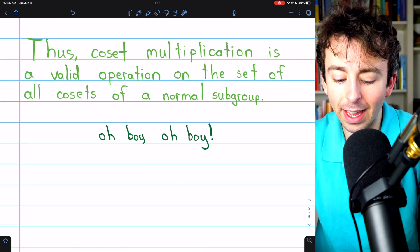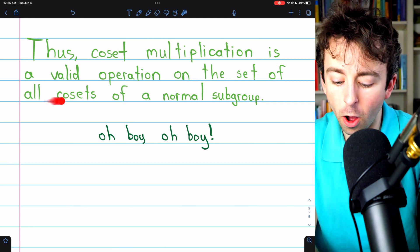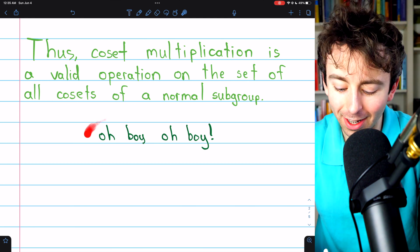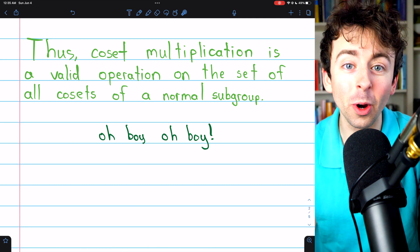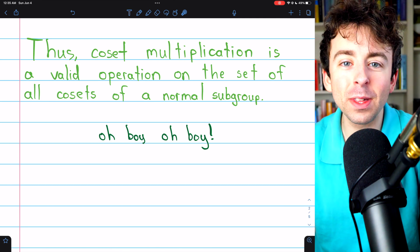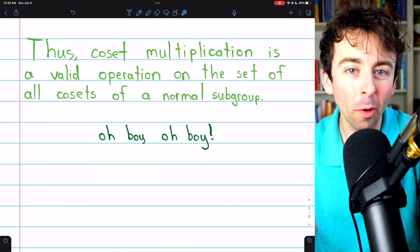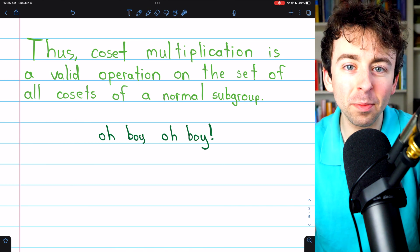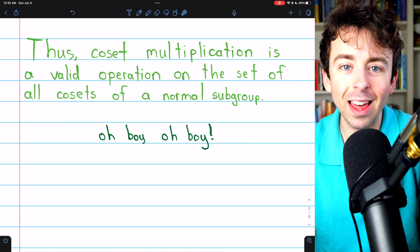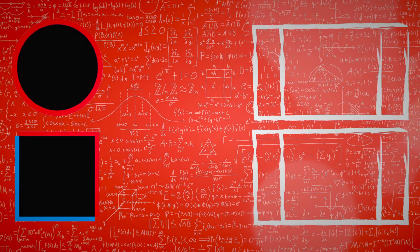So now we've shown coset multiplication is a valid operation on the set of all cosets of a normal subgroup. And you should be excited, because we're headed right towards the definition of something called a quotient group — link in the description. Hope you'll look forward to it. And if you find these abstract algebra lessons helpful, please consider supporting Wrath of Math on Patreon — link in the description.